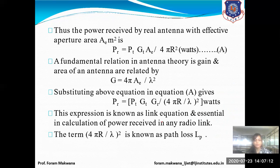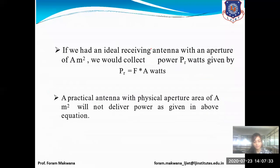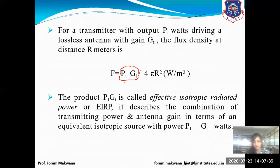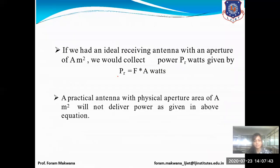Now we replace the value of physical aperture with effective aperture and aperture efficiency. The power received by a real antenna with effective aperture area Ae meter square is: Pr = PtGt × Ae upon 4πr². We need to consider the effective aperture, so we multiply F with Ae to get the received power.